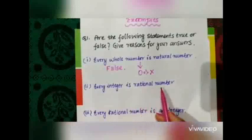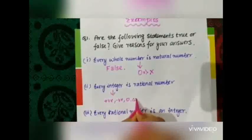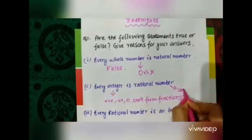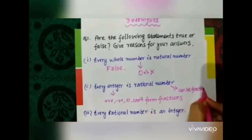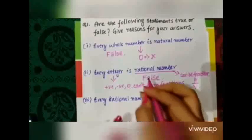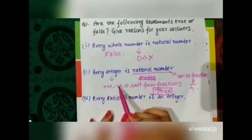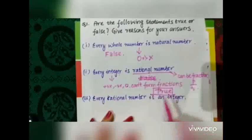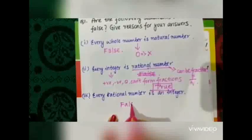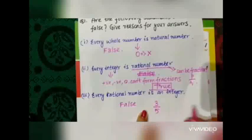Next question: every integer is a rational number. Integer includes positive, negative and 0. Rational numbers can be written in the form of P by Q form. This statement is true because all integers can be written as fractions — positive, negative and 0. All integers are rational numbers. The next question: every rational number is an integer. This statement is false. If we take an example of 3/5, this is not an integer, but it is a rational number. Hence, the statement is false.